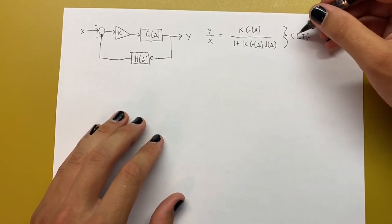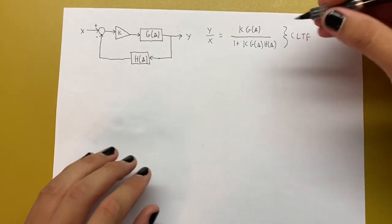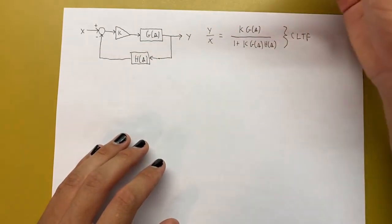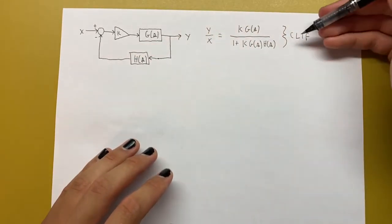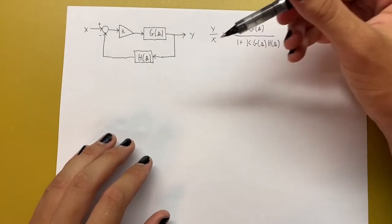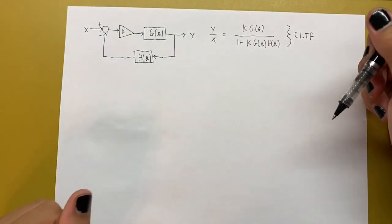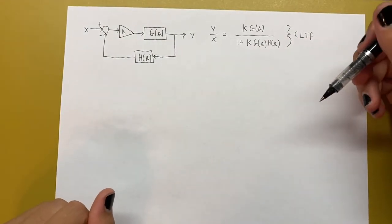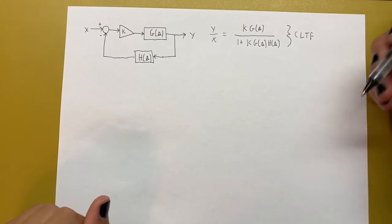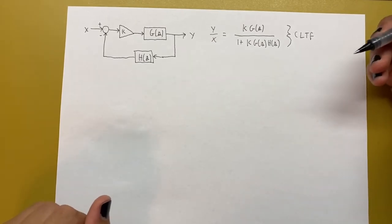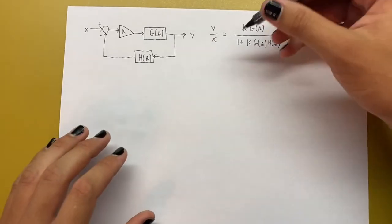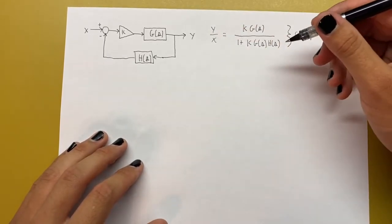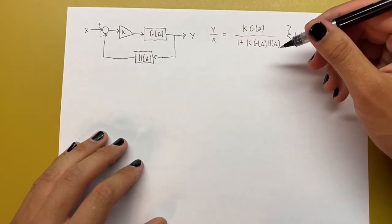The closed-loop transfer function is the whole thing — it includes the feedback and the loop is closed, that's why we call it closed-loop. It characterizes the entire system and everything it does. We know from basic system analysis that a system is characterized by its poles — more specifically, the poles of the transfer function tell you what the system is going to do.